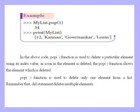The next function is pop. Using mylist.pop(1) removes the element at position index 1. After the pop operation, we have 12, 34, 'Kannan', 'Gaurishankar', 'Lenin' remaining. The pop function is used to delete a particular element using an index value. As soon as the element is deleted, the pop function shows which element was deleted. Remember that the del statement can delete multiple elements, but pop deletes only a single element.